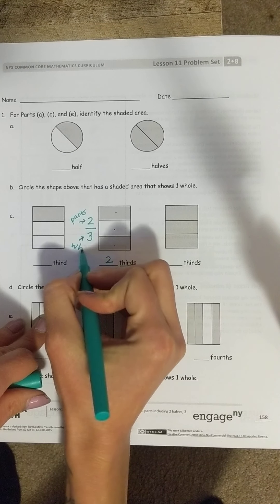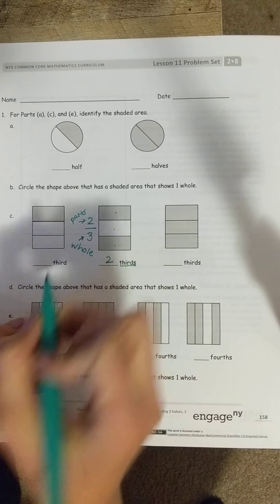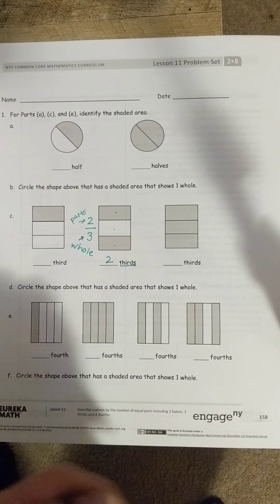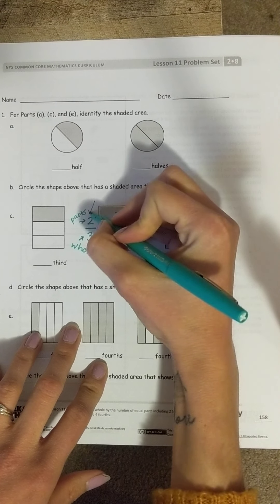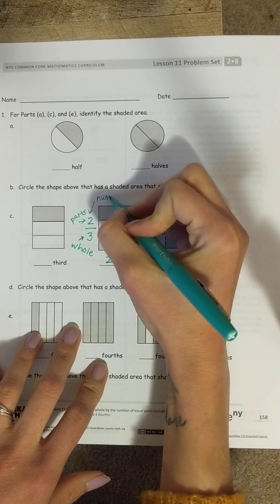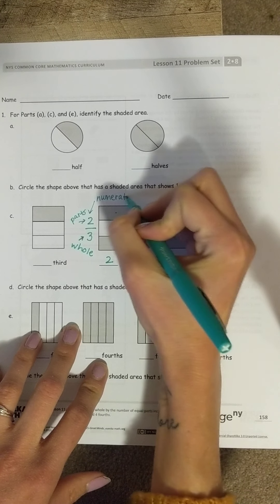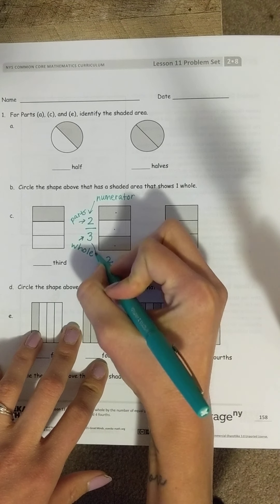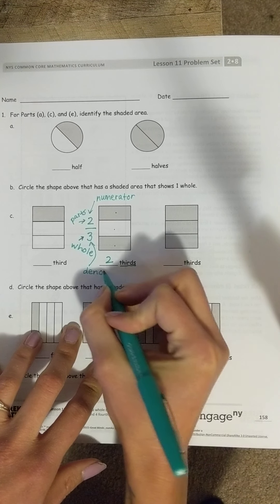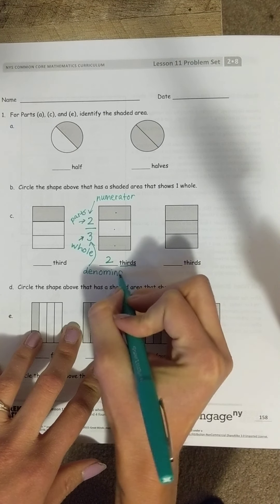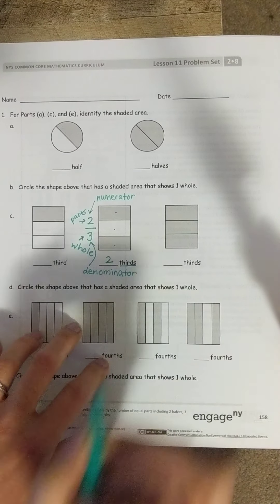I'm going to label down here whole. And if you want to get really fancy and learn the vocabulary for that fraction, the top number is called the numerator. The bottom number is called the denominator.